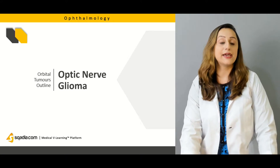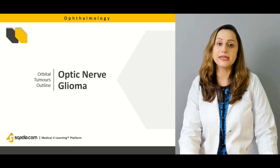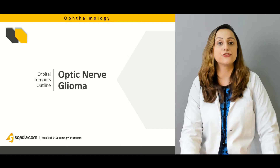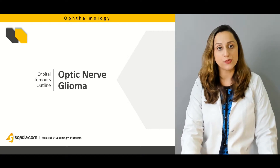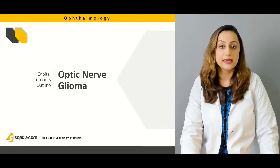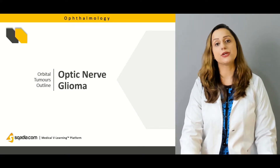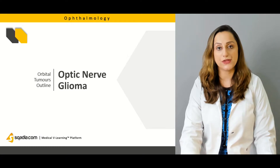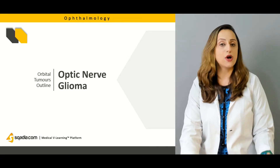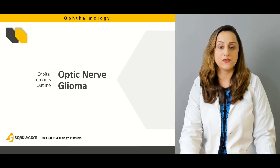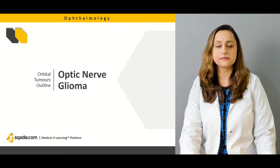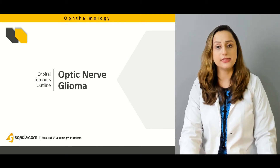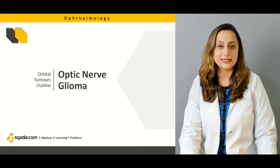We'll be discussing the gliomas surrounding the optic nerve or the optic nerve sheath. They will have their own compression syndromes on the optic nerve and compression effects, which will affect the vision of the individual. The patient would give a history of decreased or blurred vision, along with signs of optic atrophy, and how to treat these patients will be discussed.